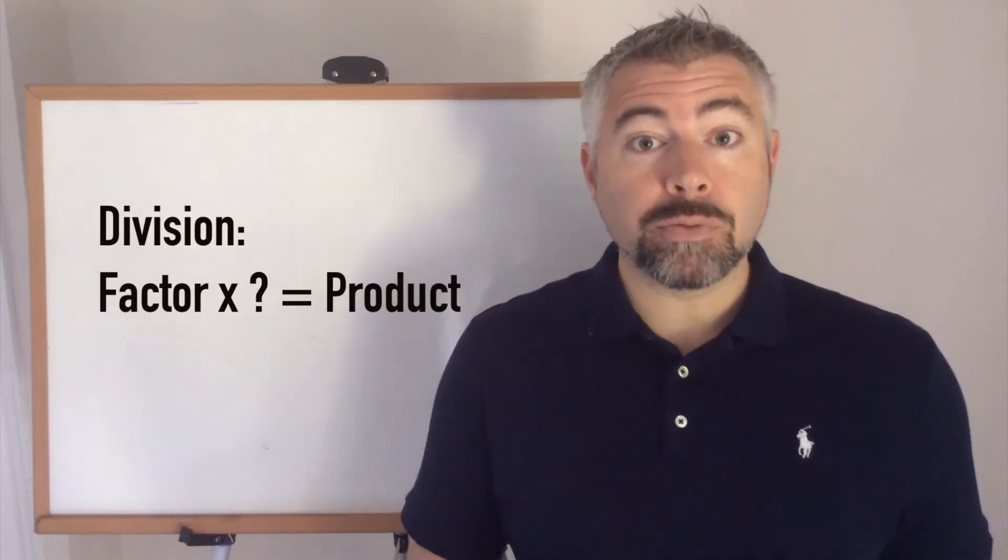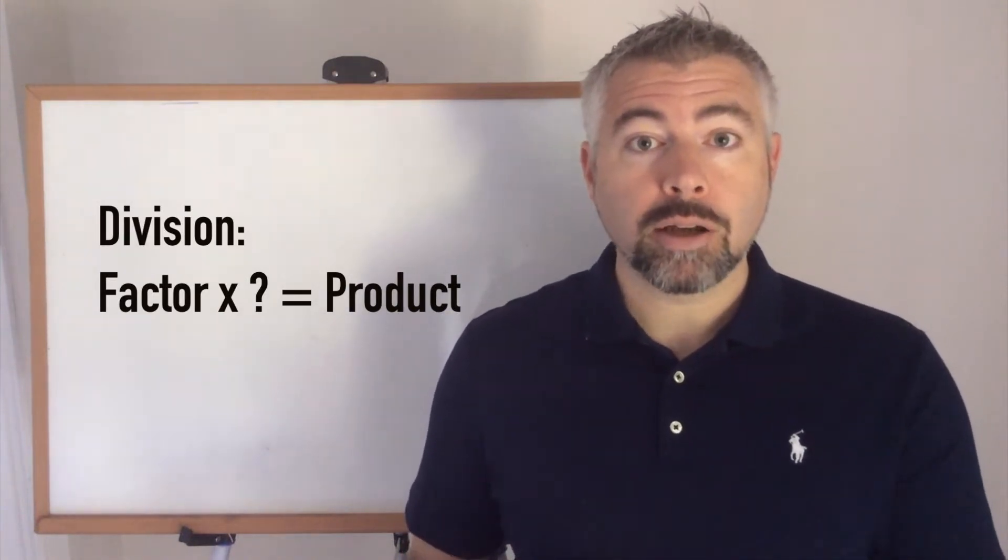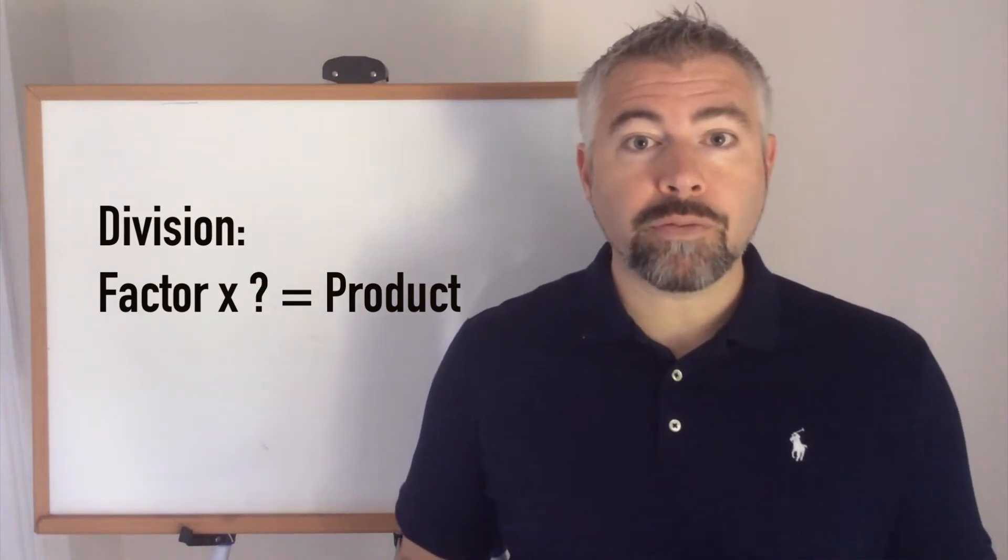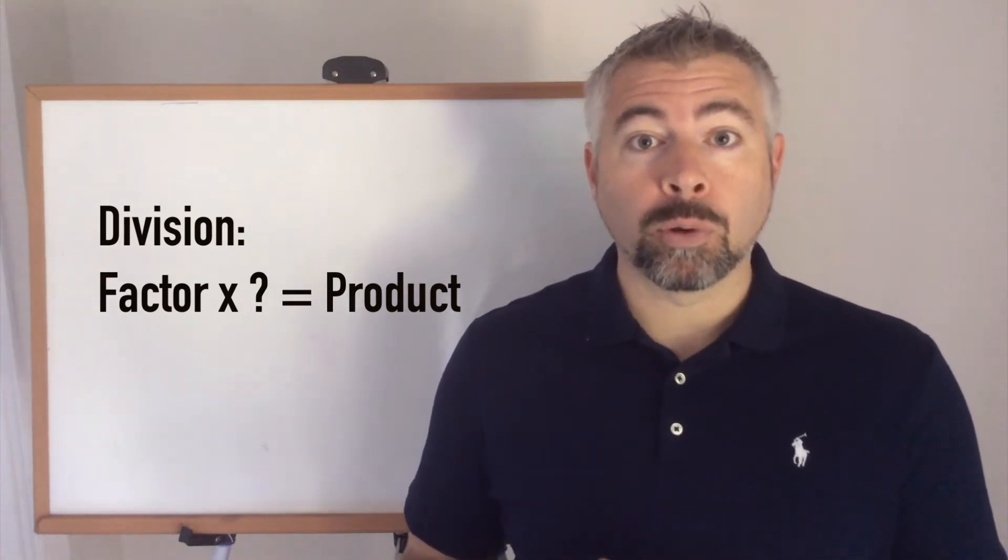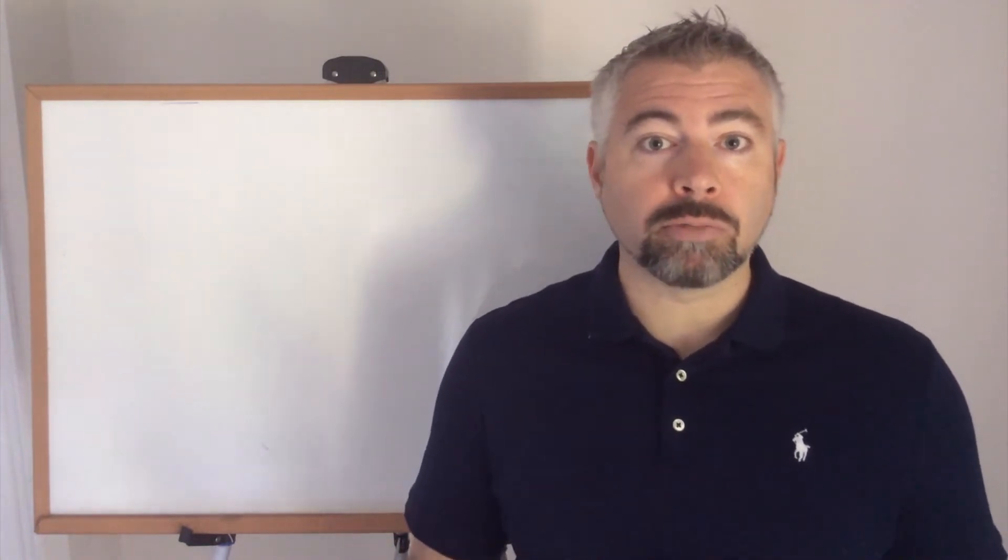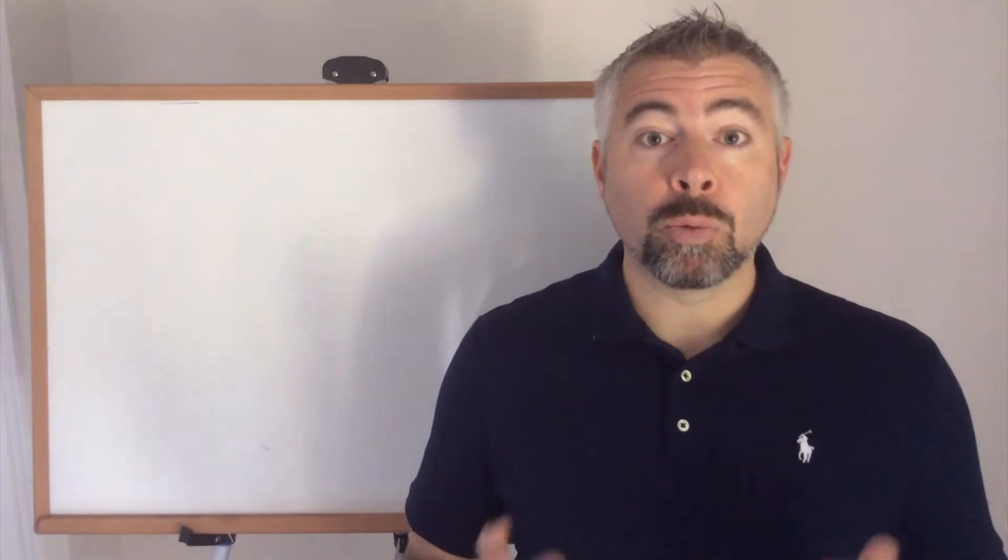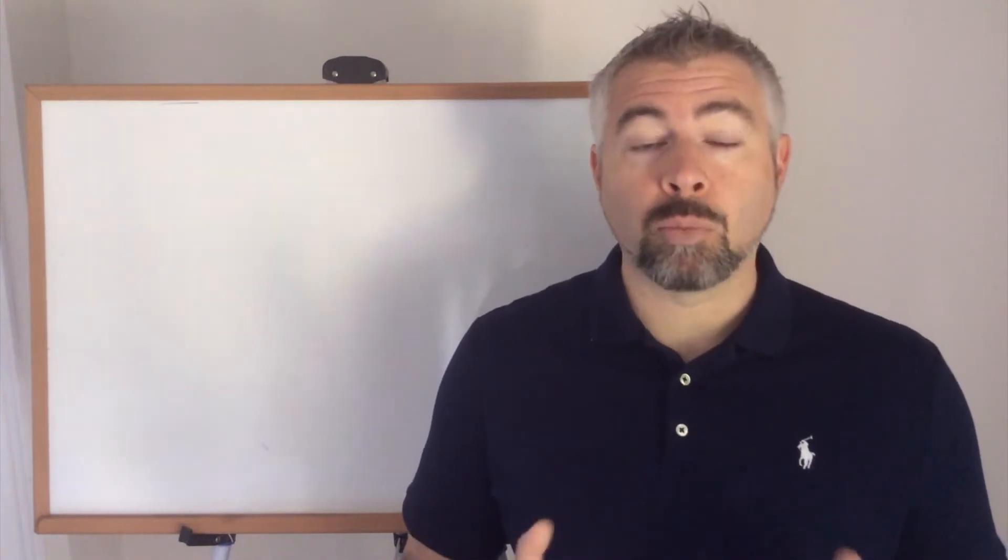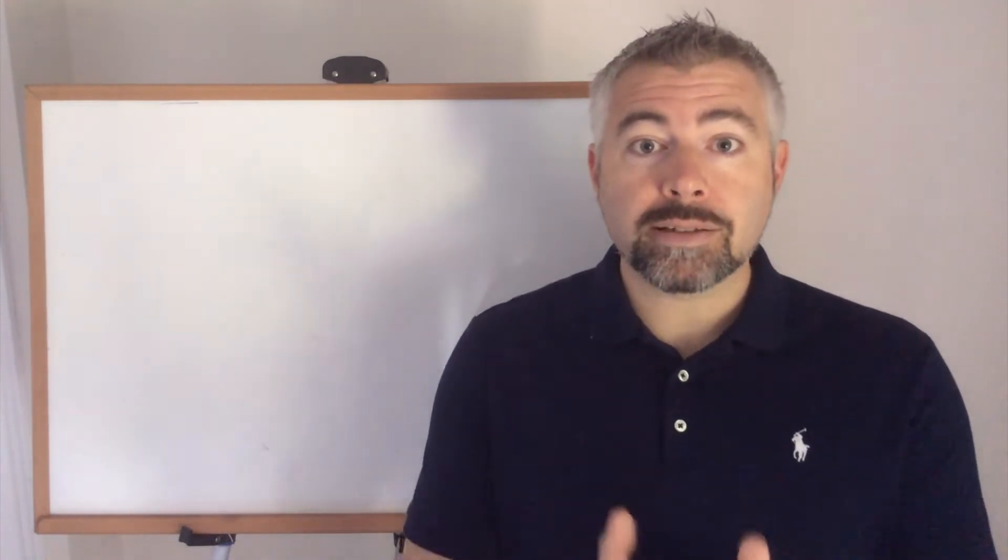When we divide, we have one of the factors and the product, and we're looking for the other factor. So if you'd like to think about how to use equal groups, rates, Cartesian products with respect to division, just imagine that one factor is missing. Let's dive into the five meanings.